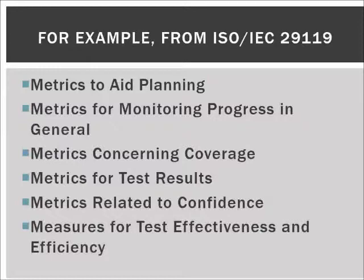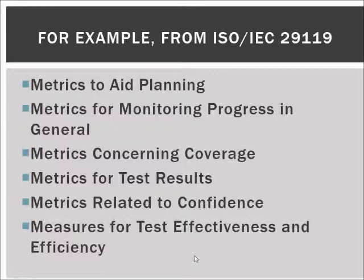The metrics related to confidence are things like failures per time unit, number of incomplete downloads, or number of orphaned files — measuring how up to date, fragile, or stable the current system is. This tells us the technical robustness information. Finally, the measurements for test effectiveness and efficiency tell about the defect detection percentage — for example from mutation testing — and also possibly the return on testing investment, such as how much money the testing work has already saved, considering bugs would have been found later in the development cycle or after launch.